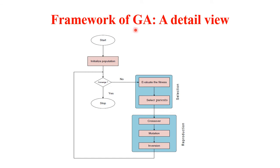In the framework of a genetic algorithm, the initial population is selected, individuals in the population are encoded, and the best parents are selected. Now we have to perform reproduction. Crossover, mutation, and inversion are the three common techniques for producing new offspring.